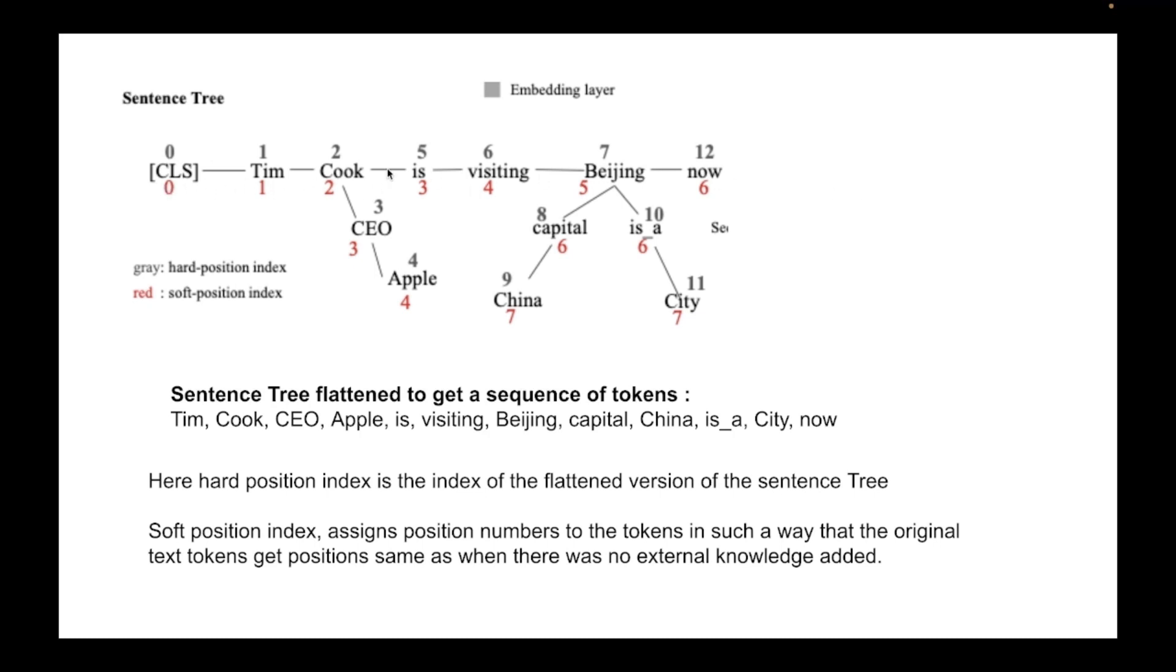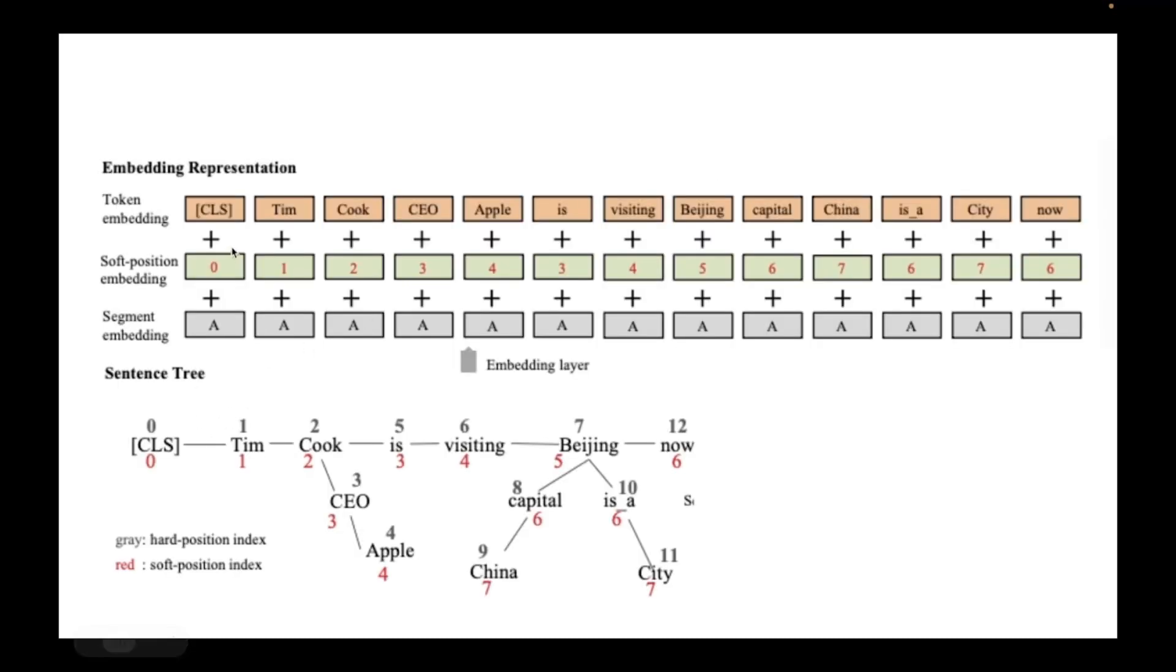So from the perspective of soft position tokens, this sentence makes sense and this sentence makes sense. Similarly this also makes sense. So in some way they're trying to represent this sentence tree without damaging the original token positions of the original text. Finally they take these soft positional embeddings and add it to the token embeddings before passing on to the transformer layer.